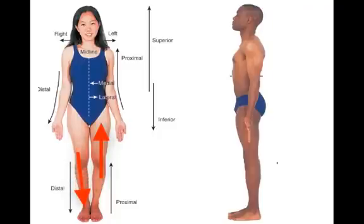Can you come up with an example that describes the location of two body parts relative to one another on the leg? Is the knee proximal or distal in relation to the ankles? I hope you said that the knees are proximal in relation to the ankles.